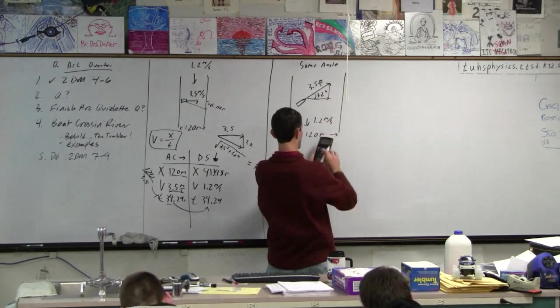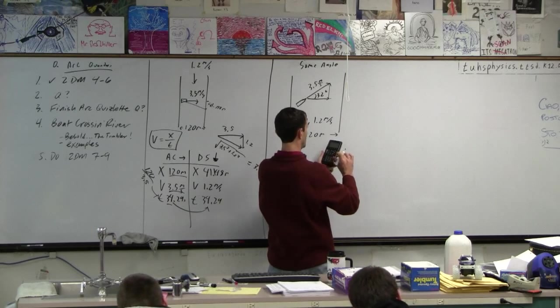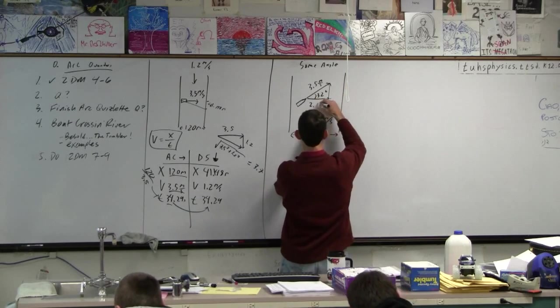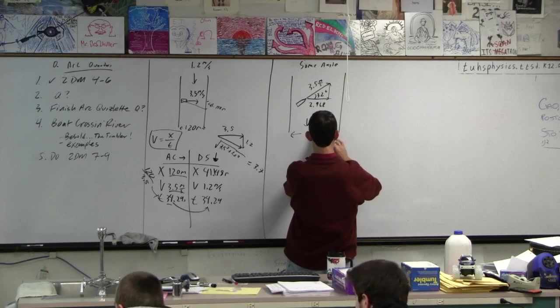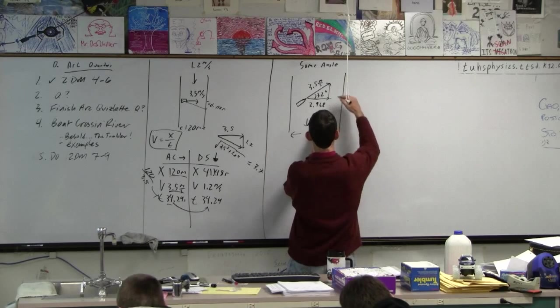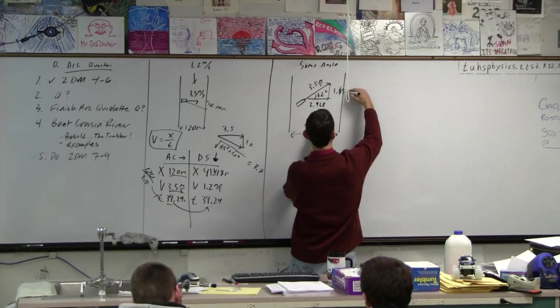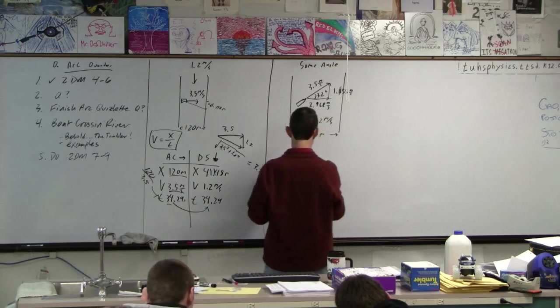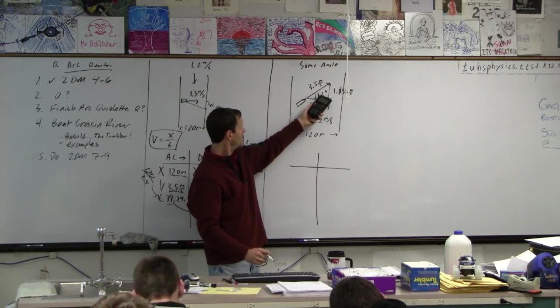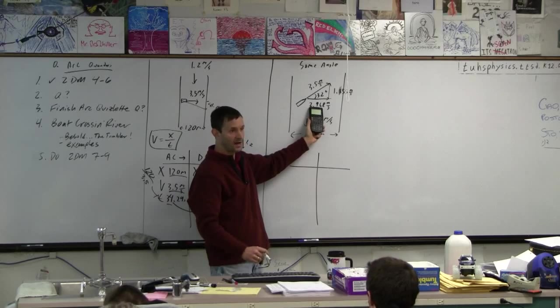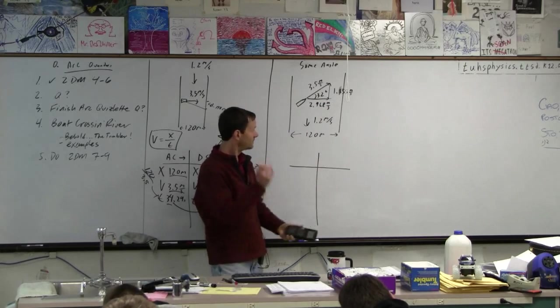Okay? So this side here, I'm going to go 3.5 times cos 32. And this side here is 2.968. This side here is 3.5 sine 32. That's 1.8855 is what I'll write. All right. Now. So we did this. This is 3.5 cos 32 is this guy. Cos gives you x. And sine gives us y.